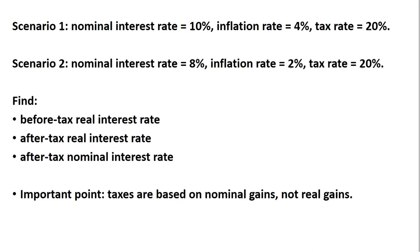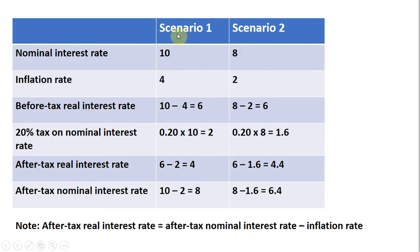I'll put this information in a table. We have scenario 1 and scenario 2 in their own columns. In scenario 1, the nominal interest rate is 10% and the inflation rate is 4%. So to get the before-tax real interest rate, 10 minus 4 gives us a before-tax real interest rate of 6%. Now let's determine the size of the tax.